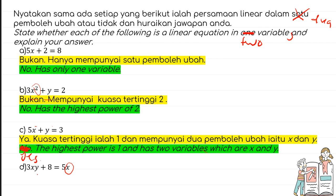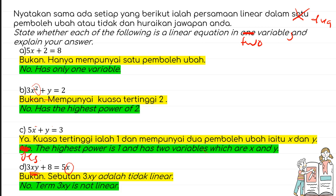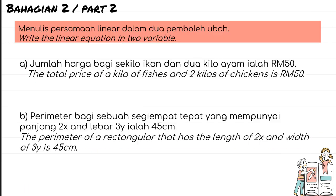The last one: 3xy + 8 = 5x. We have x and the term xy, but xy is not linear. So the answer is no — the term 3xy is not linear. You can check your textbook; it mentions that xy is not linear.